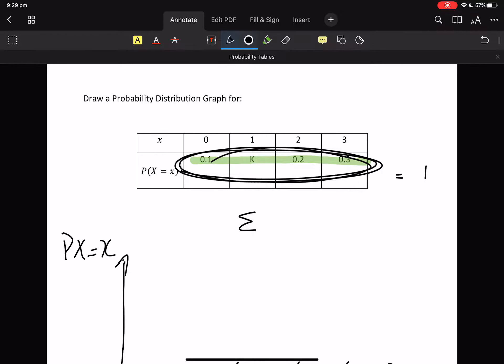So, there's a rule for that. The sum of P of X equals X equals 1. That's validation. That's just, sorry, not validation. It's justification for saying that that must be 1. So, you're going to go 0.1 plus k plus 0.2 plus 0.3 equals 1 and k equals 0.4.